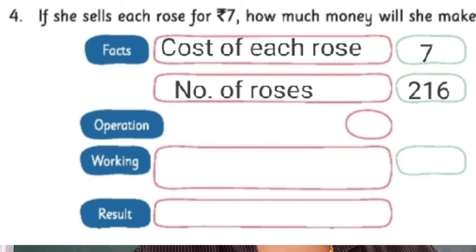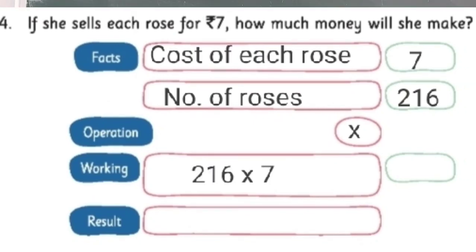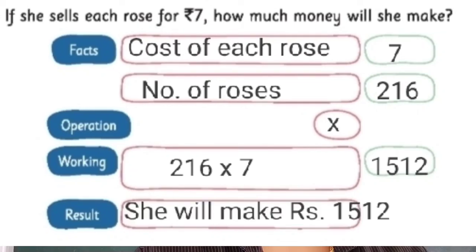Next is operation. The cost of each rose is 7, so what will be the cost of 216 roses? Yes, we have to do the multiplication. The operation is multiplication. Next, let's write the working: 216 into 7. We got the answer 1512. So we can write the result as: she will make Rs. 1512.